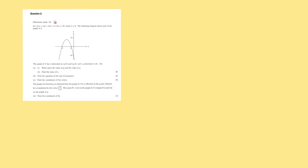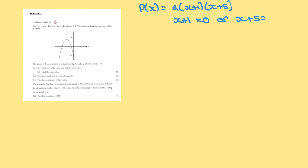In this question, f of x is equal to a times the quantity x plus 1 times x plus 5. We want to find p and q. p and q are when x plus 1 equals 0 or x plus 5 equals 0, therefore x equals minus 1 or x equals minus 5. So p is equal to minus 5 and q is equal to minus 1.